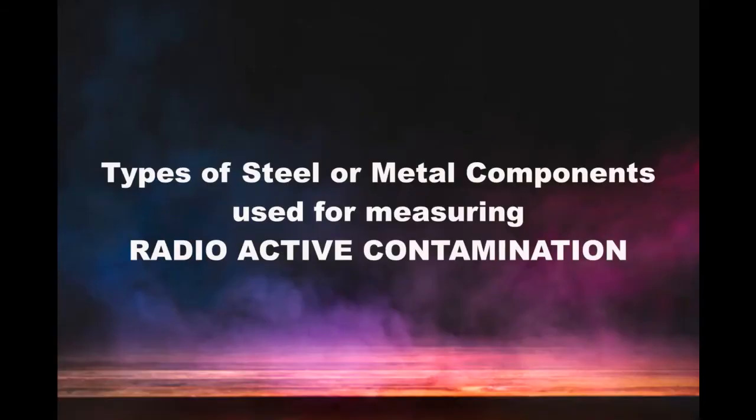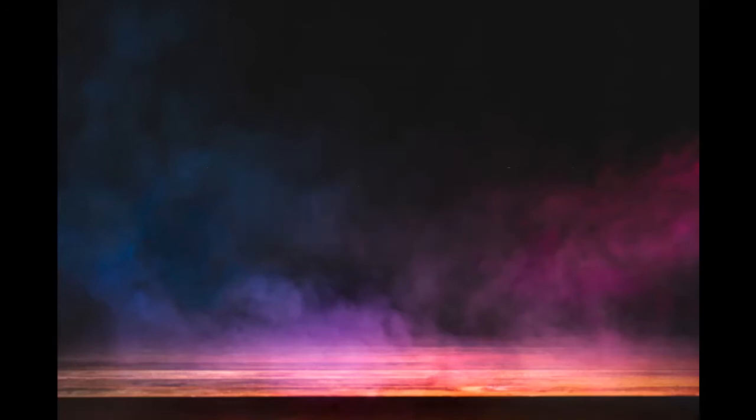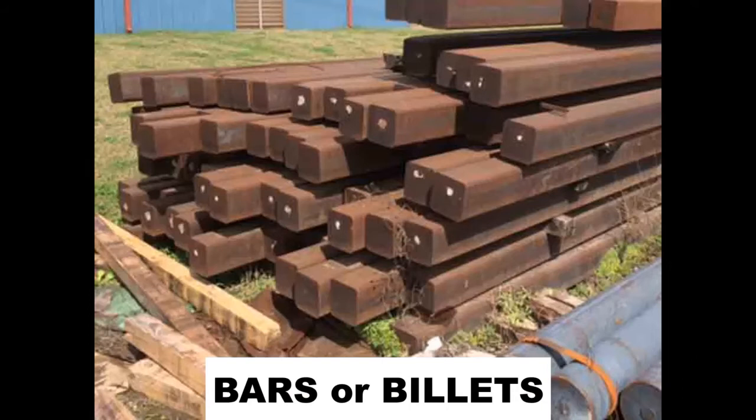Type of steel or metal components that are measured for radioactive contamination, and also choosing the measuring points. 1. Bars or billets. We have to choose along the length 4-5 points for measurement.